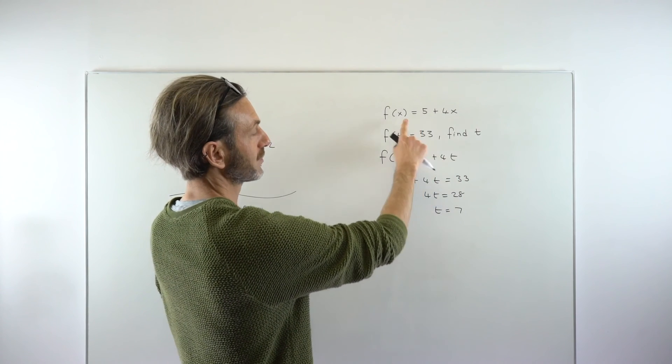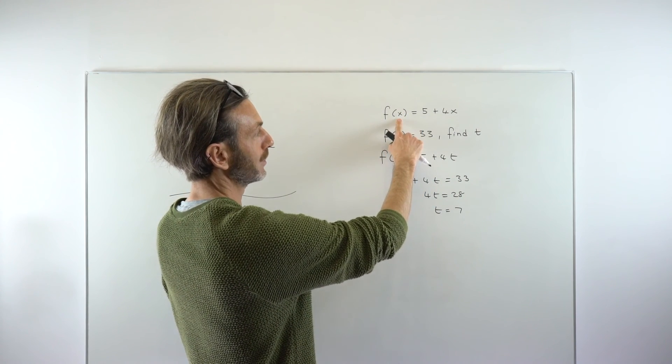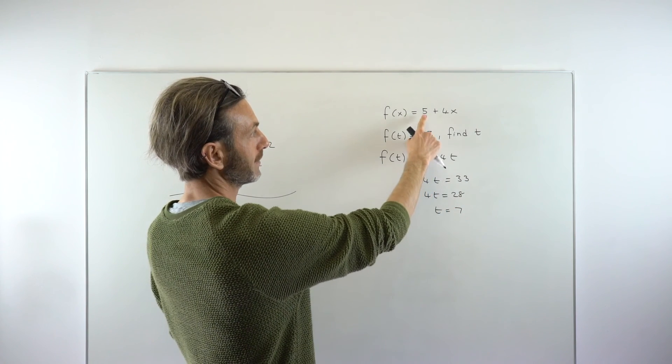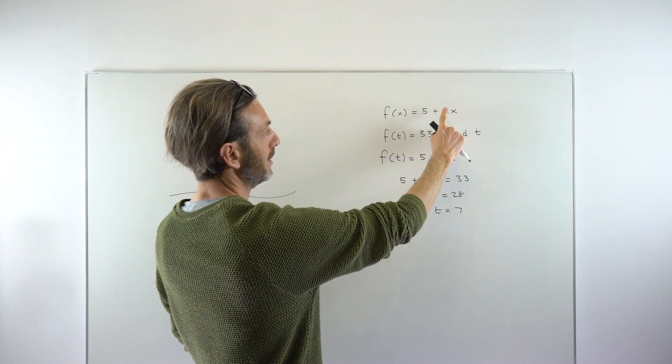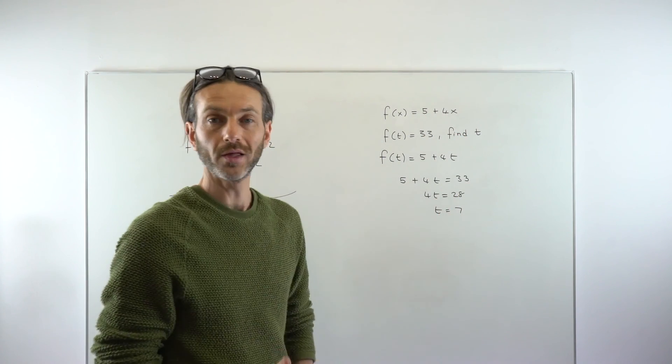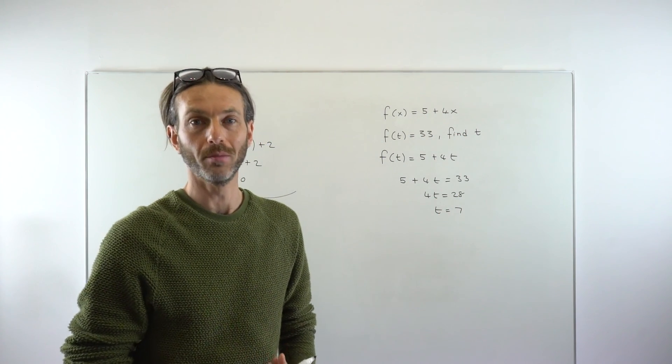So that tells us if we put the number 7 into that function, we would get the number 33 out. Let's just check that. That would be 5 plus 4 times 7. 4 times 7 is 28, plus 5 is 33. So essentially working these function questions backwards.